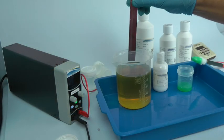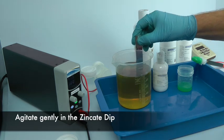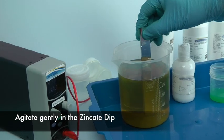Dip the piece of aluminium you want to plate in our zincate dip for about a minute. While the aluminium is in the zincate dip, move it gently around in the solution.